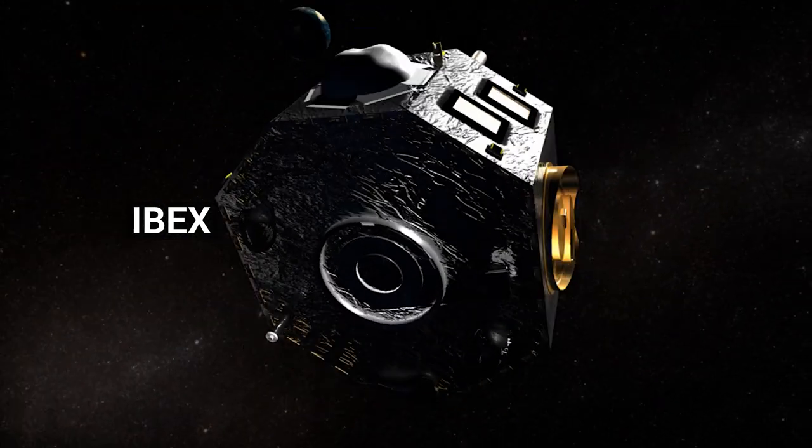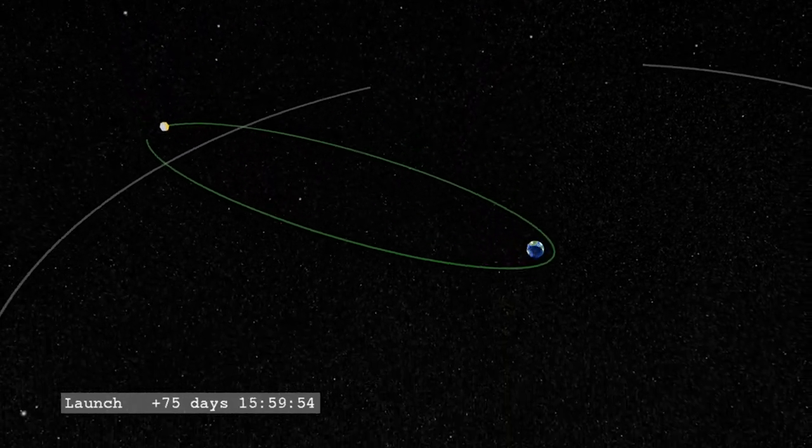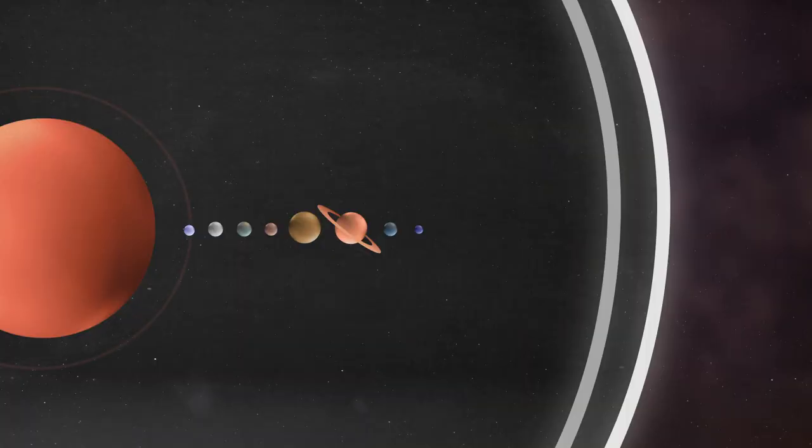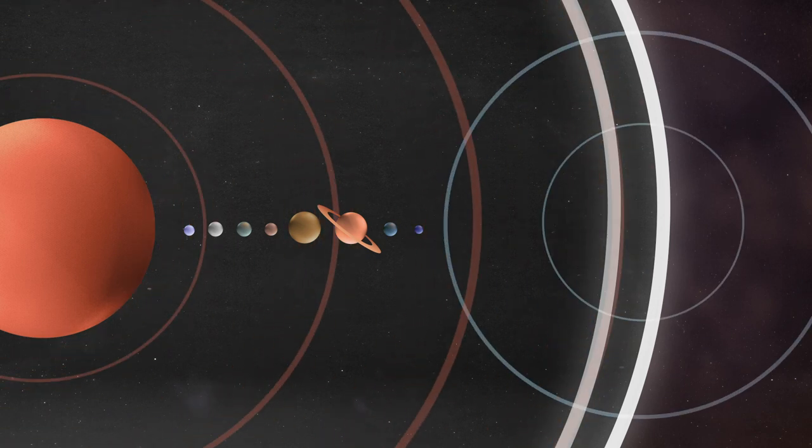About the size of a bus tire and in orbit around Earth, IBEX maps the heliosphere with a process similar to sonar. But instead of using sound to detect objects, it uses the echo of solar wind variations.